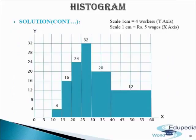After adjusting the frequencies, we will now make a histogram with unequal class intervals. We will write the heading 'Weekly Wages of Workers'. On the x-axis we have taken wages, and on the y-axis we have taken number of workers. Scale is 1 cm equals 4 workers on the y-axis and 1 cm equals rupees 5 wages on the x-axis. The height of the rectangle depends on the adjusted frequencies: 4, 16, 24, 32, 20, and 12, and the width of the rectangle is according to the class intervals: 10–15, 15–20, 20–25, 25–30, 30–40, and 40–60. This is how we will make a histogram with unequal class intervals.